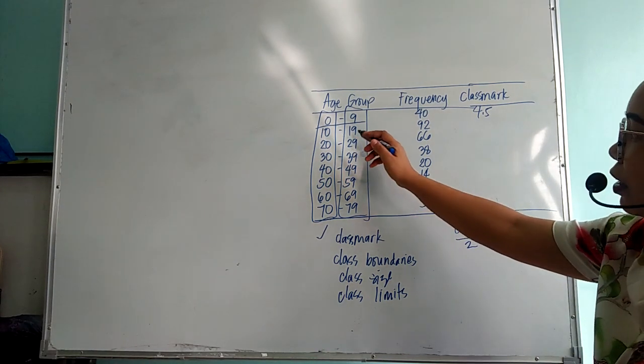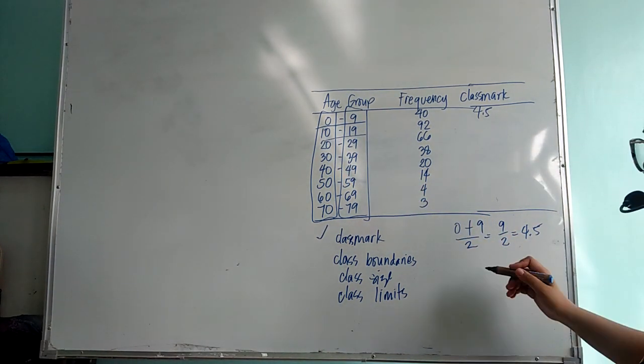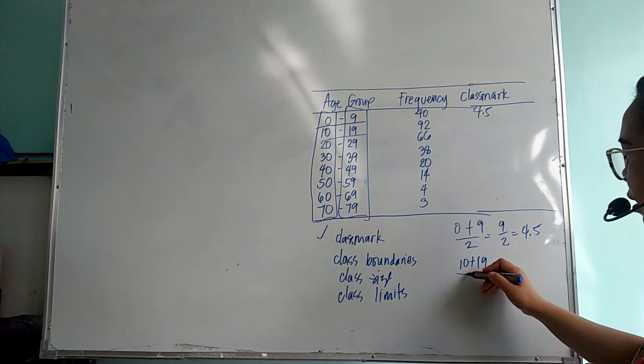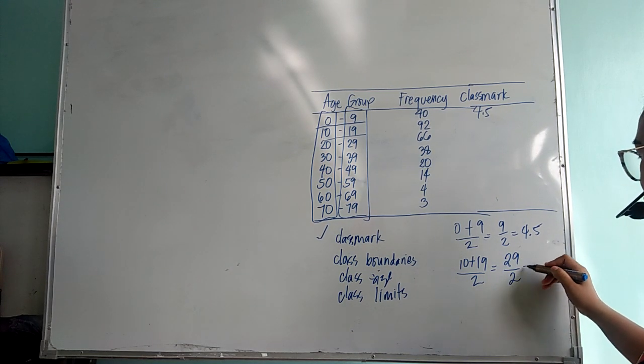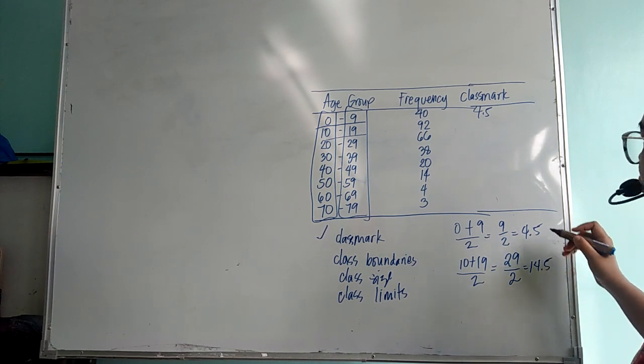Next, again we get the average of the interval of 10 to 19. So 10 plus 19 divided by 2. So we have 29 divided by 2. So that is 14.5.